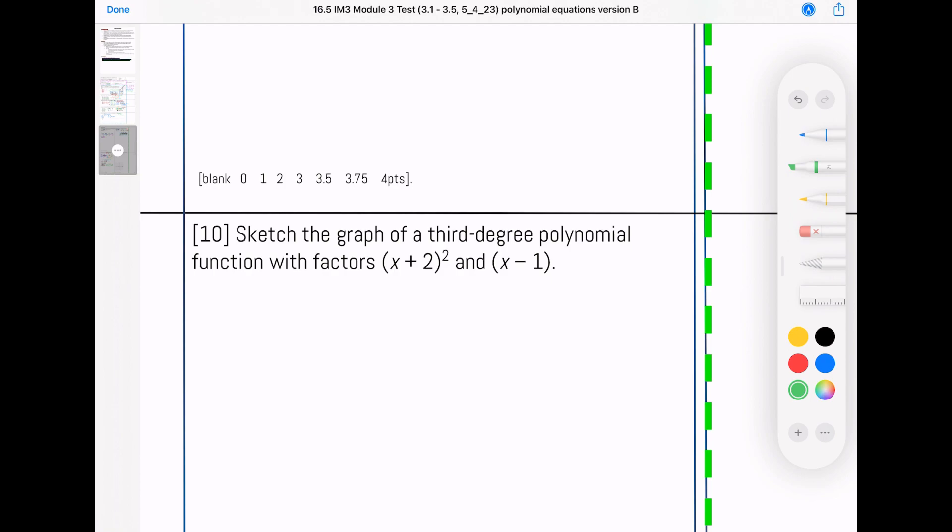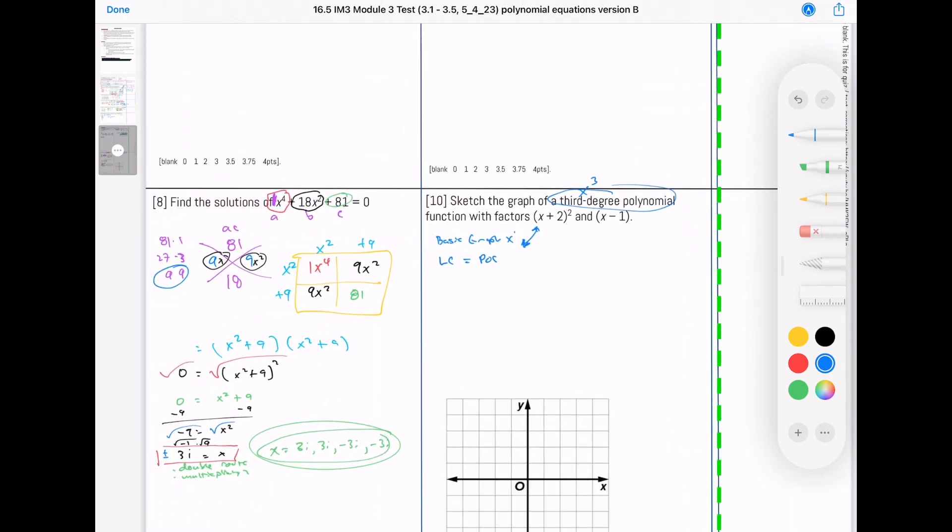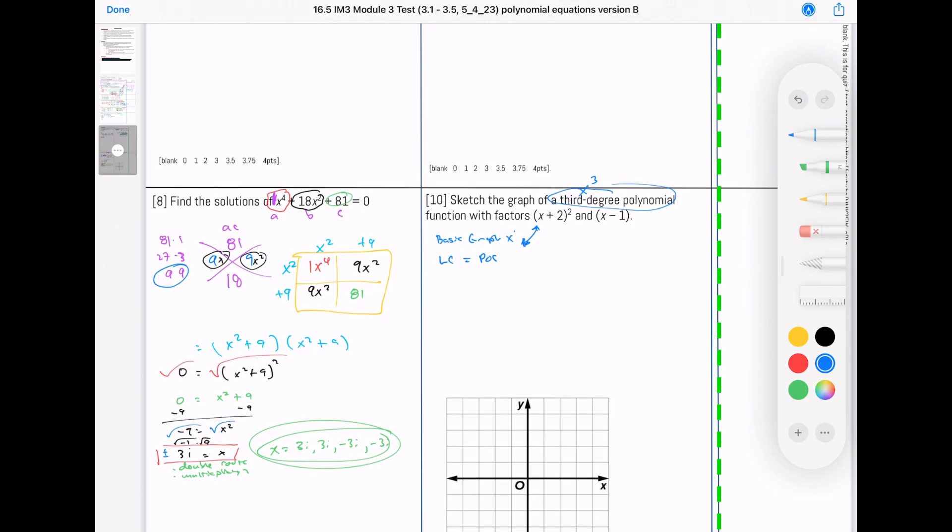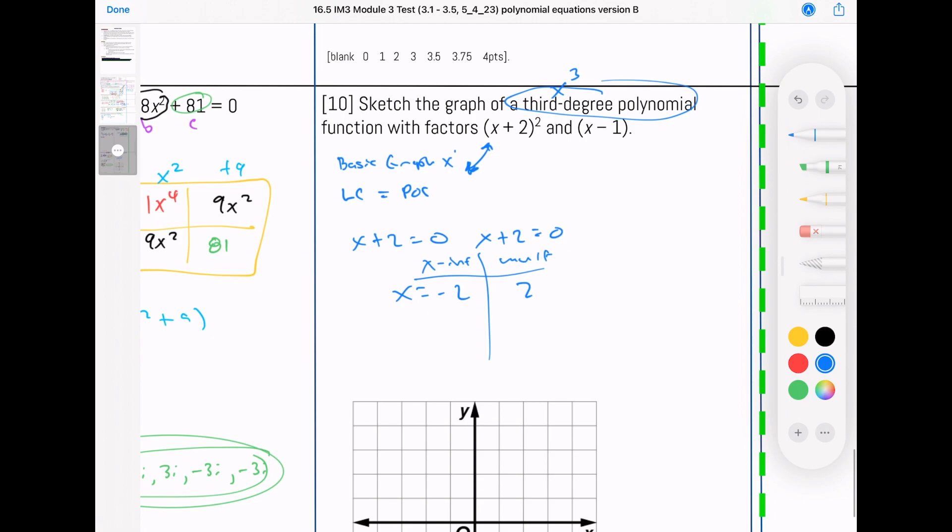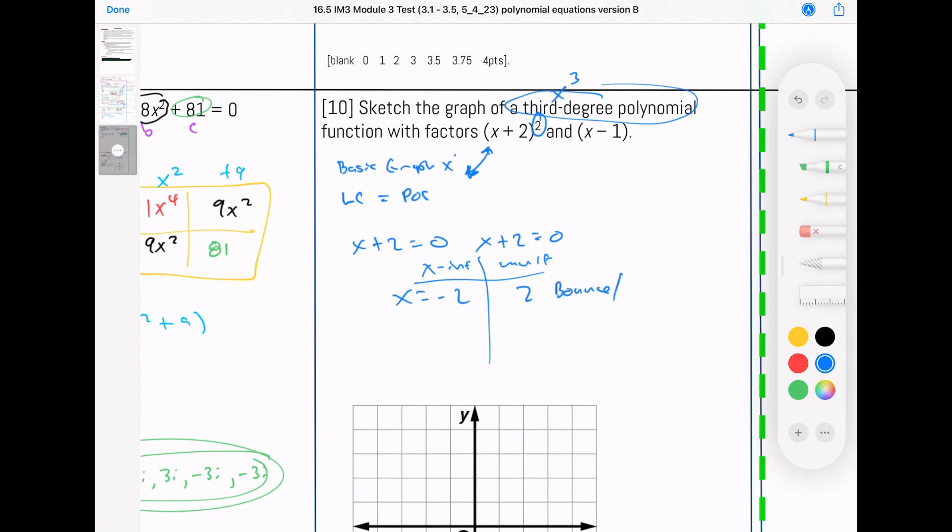Question number 10: sketch the graph of a third degree polynomial with the functions x plus 2 squared and x minus 1. I'm thinking about a basic graph. X to the third means like x to the first, so start down and up. The coefficient I'm assuming is positive, so these arrows will stay right there. Let's talk about our multiplicity. X plus 2, you'll get x equals negative 2. So this is my x-intercept and the multiplicity is 2. 2 means a bounce or a kiss, because it's an even multiplicity. This one, x minus 1, so x equals 1. And this one has a multiplicity of 1, which is a shoot through.